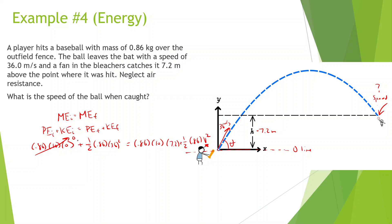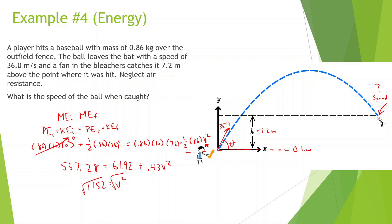Simplifying: 557.28 equals 61.92 plus 0.43v squared. So 557.28 minus 61.92 divided by 0.43 gives v squared equals 1152. Taking the square root, velocity equals approximately 33.9 meters per second. Next time we'll learn more about elastic potential energy along with these two types of energies. Thank you.